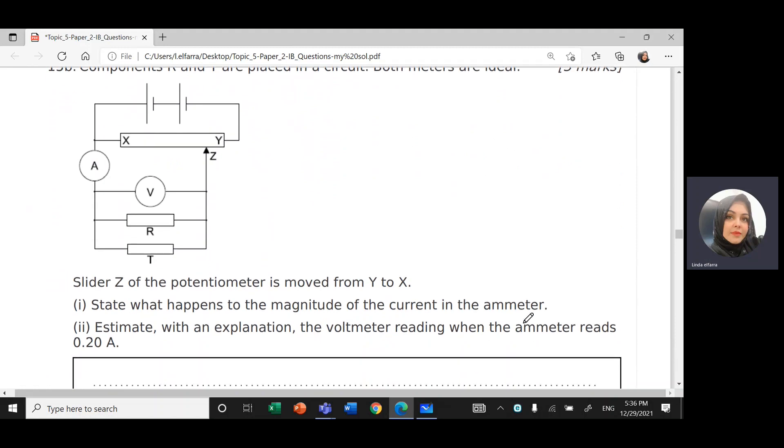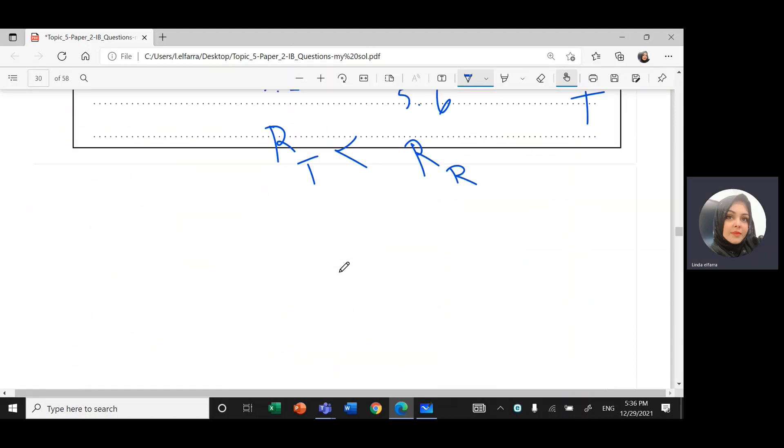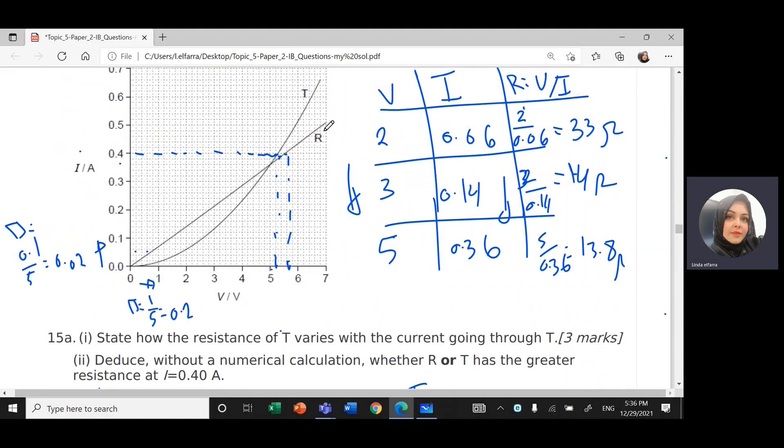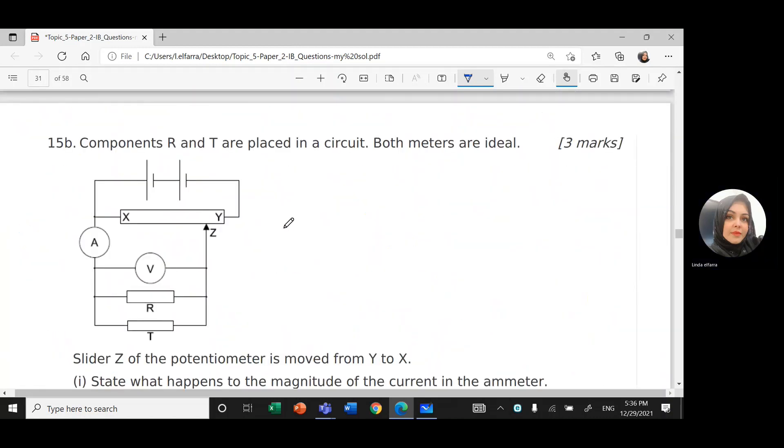Second part of the question. Here, you have the component of R and T. Remember, R obeys Ohm's law while T doesn't obey Ohm's law. This is non-ohmic resistance and this is ohmic resistance. Ohmic resistance, the relationship between current and voltage should be a straight line as in case of R.